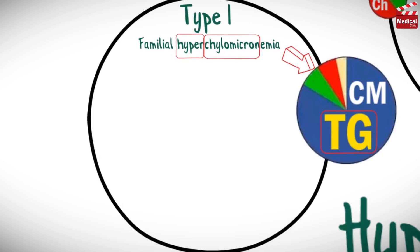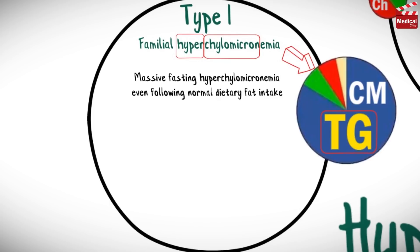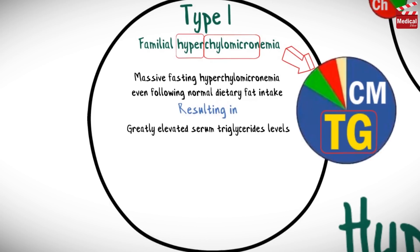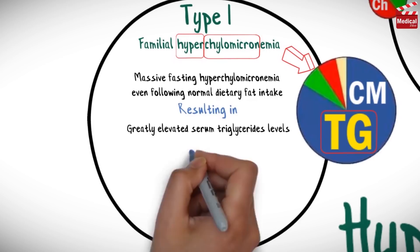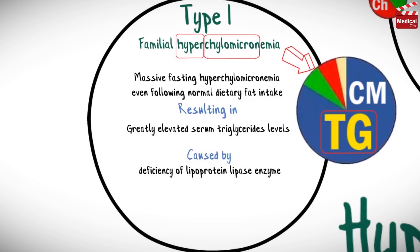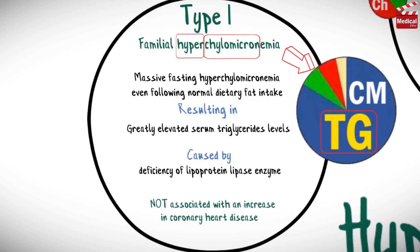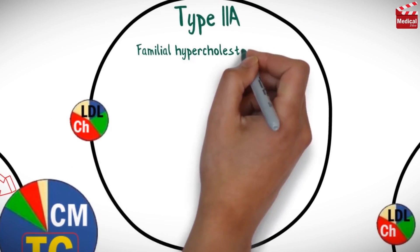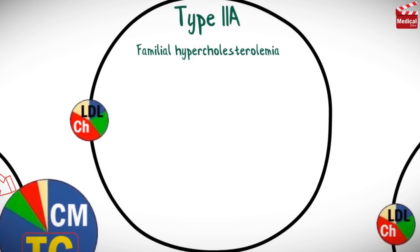Type 1 is characterized by massive fasting hyperchylomicronemia even following normal dietary fat intake, resulting in greatly elevated serum triglyceride levels. This condition is caused by deficiency of the enzyme lipoprotein lipase, and this type is not associated with an increase in coronary heart disease.